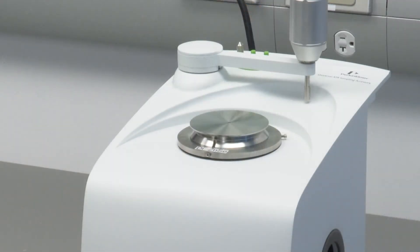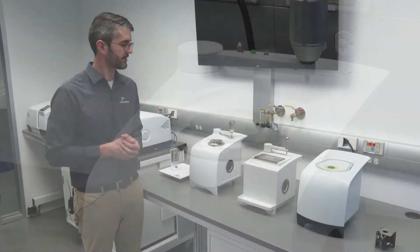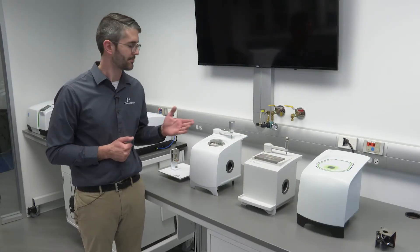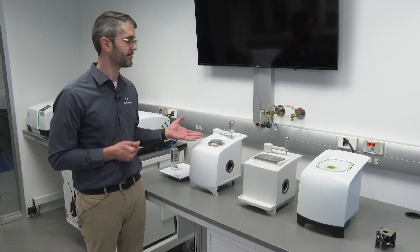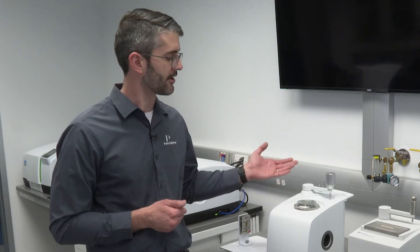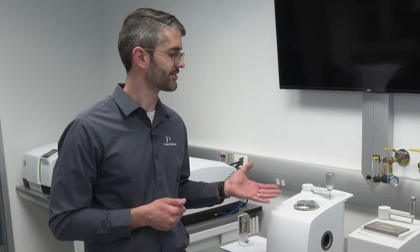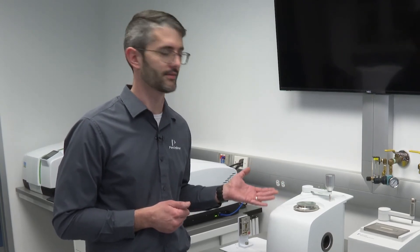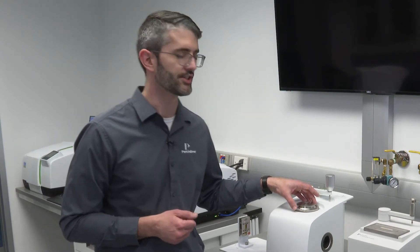In some instances, the single-reflection ATR top plate simply doesn't provide enough sensitivity for the sample or the parameter of interest. In those instances, a multiple-reflection top plate may be used on a sampling accessory like this. PerkinElmer offers one reflection, three reflection, and nine reflection top plates, which allow the user to change the sensitivity of their ATR measurement.